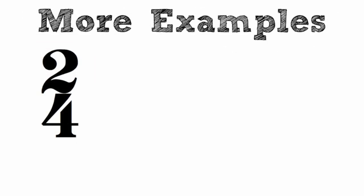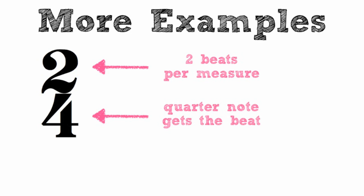This is a 2-4 time signature. The 2 on top suggests there are 2 beats per measure and the 4 on the bottom means that the quarter note gets the beat.